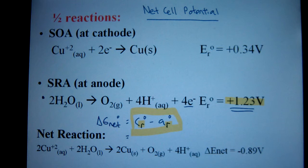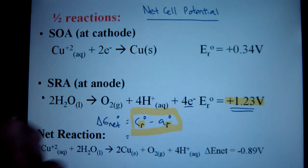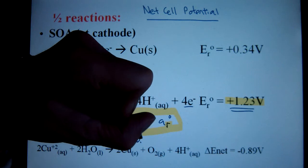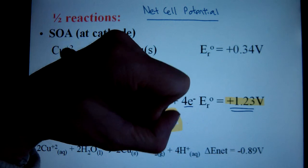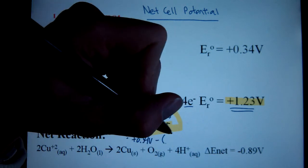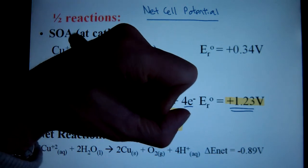All you need to do is determine what my SOA is going to be, which is there for my cathode half reaction, fill in its voltage, and then subtract the voltage of the SRA, which is reacting at the anode, in this case water.